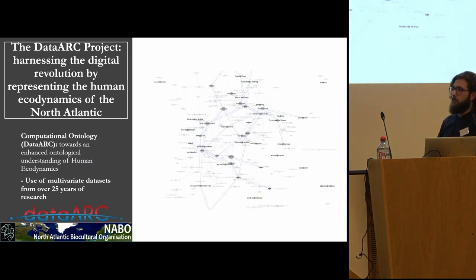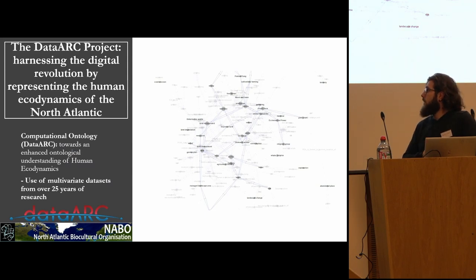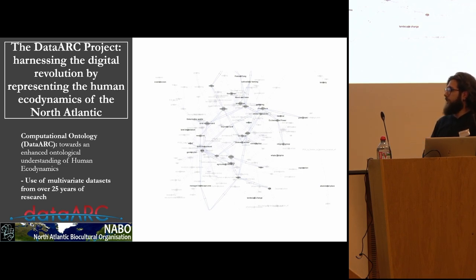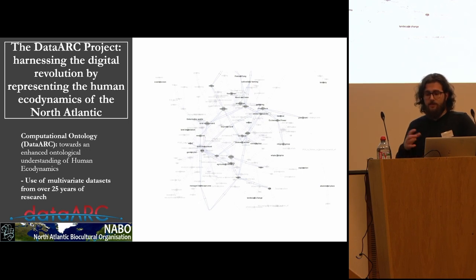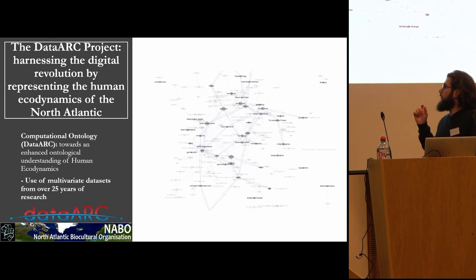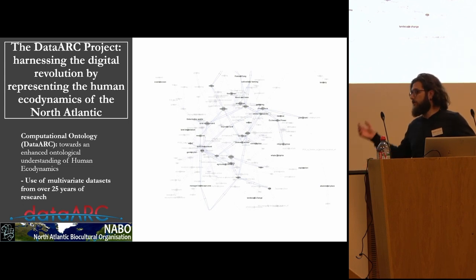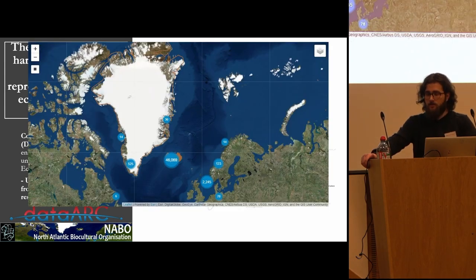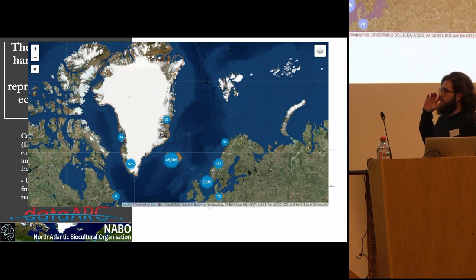Perhaps the most important example that I bring today is that of the TAR project, which was an NSF-funded project that ended last year. With this project, the whole team tried to create a computational ontology that represented the human ecodynamics of the North Atlantic. The main feature was developing a computational ontology that represents these interrelationships between different agents. For that, we used data gathered from over 25 years of research carried out by NABU, which is the North Atlantic Biocultural Organization. As you can see, it was a humongous project that made use of a lot of different data from across the North Atlantic.